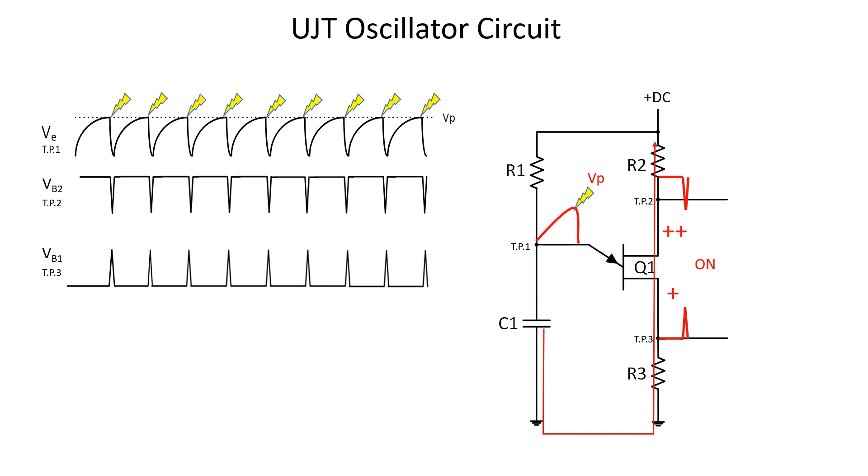Eventually, C1 discharges far enough below the VP that Q1 turns back off, and the outputs return to their previous state. Then, C1 starts charging back up to the VP again, and the process repeats until the DC power is removed. Lastly, you'll need to be able to calculate the frequency using the formula below. You can find it on table 6 of your formula sheets. Pro tip.